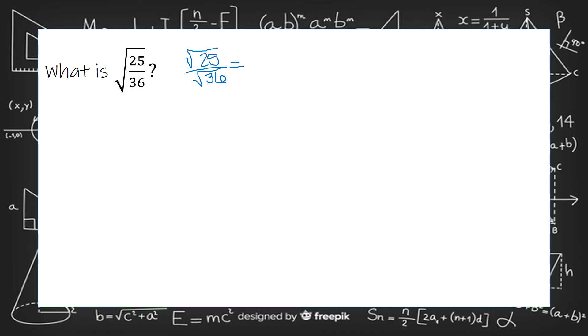So the square root of 25 is the square root of 5 squared or just 5. The square root of 36 is the square root of 6 squared or just 6. So the square root of 25 over 36 can be simplified to just 5 over 6.